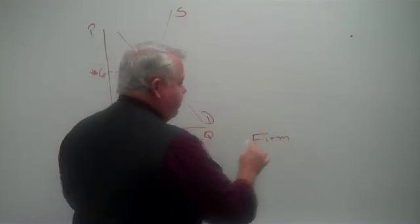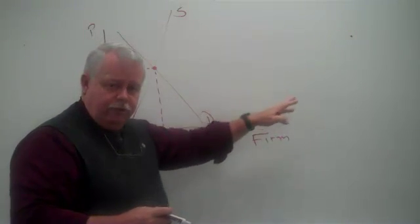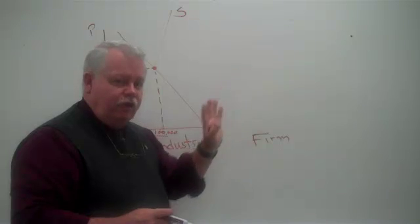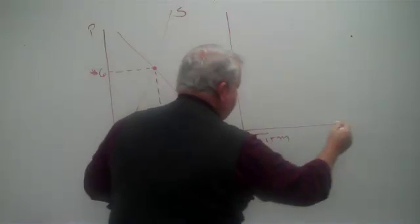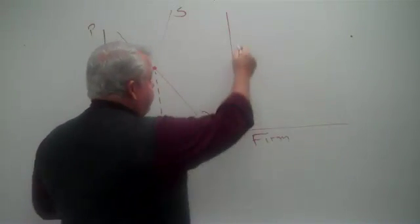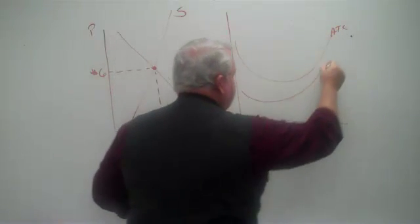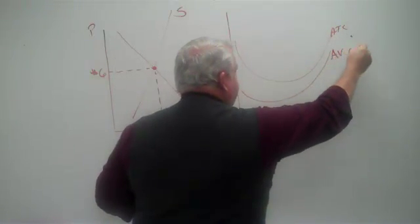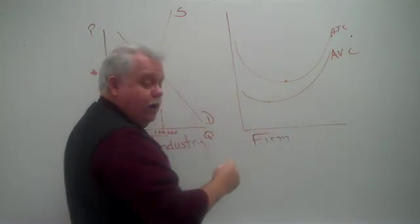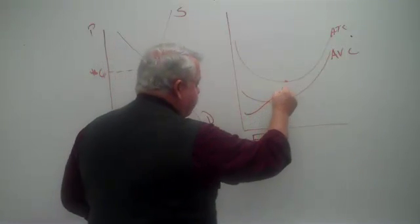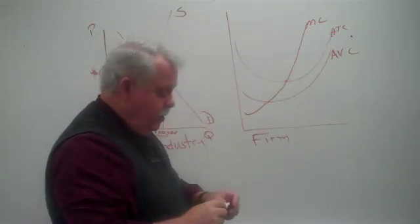A single company who's selling in this industry. And we're going to assume all of the firms have the same cost curves. And so we say for the firm, that means that they've got an average total cost curve, an average variable cost curve. Remember those? And going through the lowest points of these two curves, their marginal cost curve. Just the way we've studied it in previous chapters.